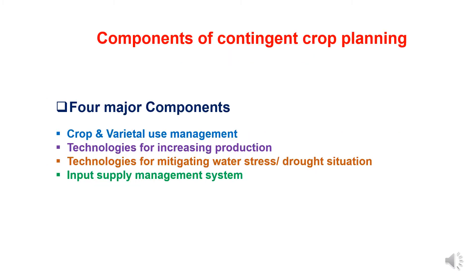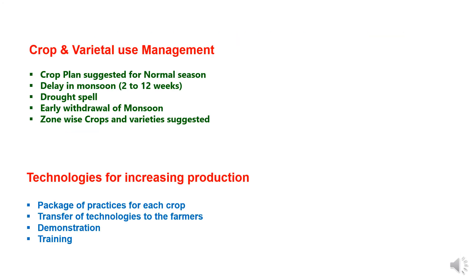There are four major components of contingent crop planning: first, crop and varietal use management; second, technologies for increasing crop production; third, technologies for mitigating water stress and drought situations; and fourth, input supply management system. According to the situation, changes are made in sowing pattern or planting time, seed rates, fertilizer schedule, use of short duration varieties, improved crop genotypes, and other best practices.